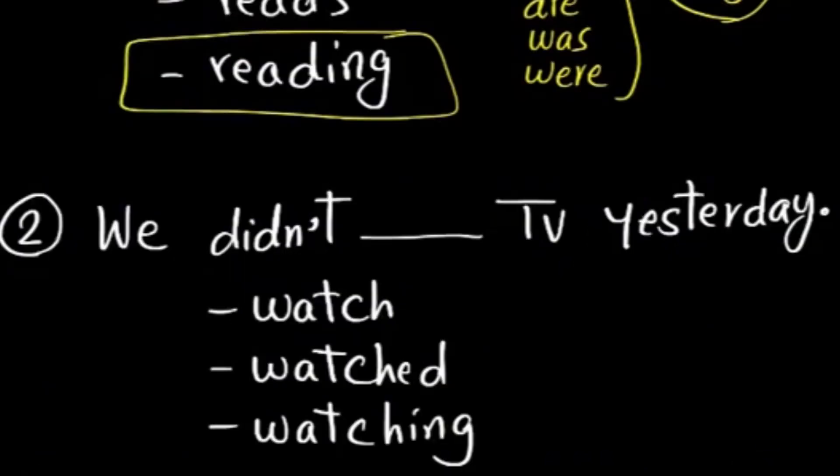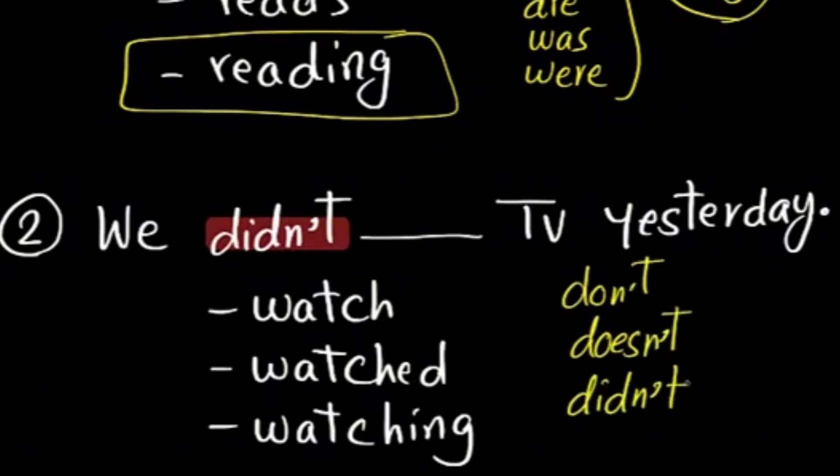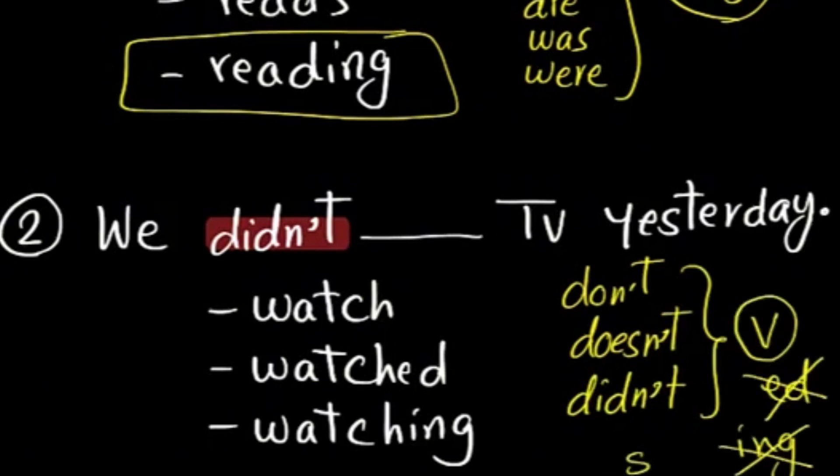With two, we didn't blank TV yesterday: watch, watched, watching. The key here is 'didn't'. Also keep this rule: after don't, doesn't, didn't, we should choose the base verb, the original verb. No 'ed', no 'ing', no 's', just the verb. So we choose watch here.